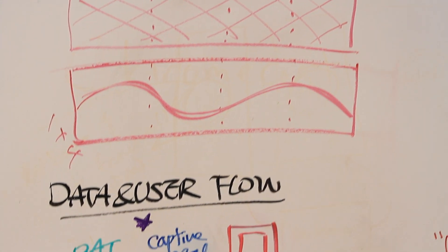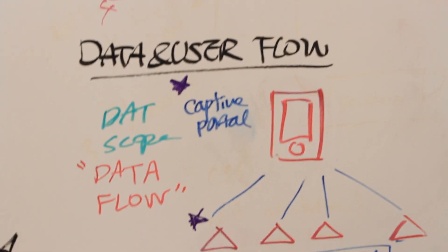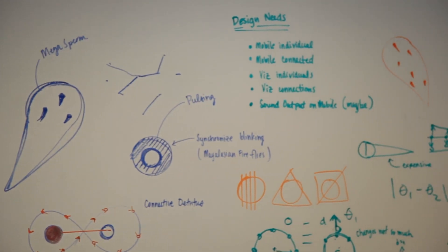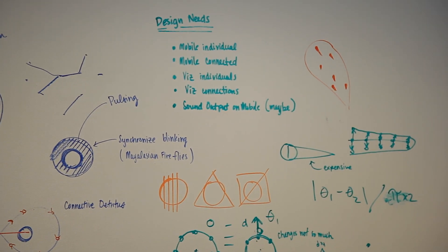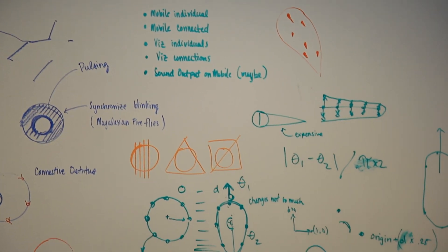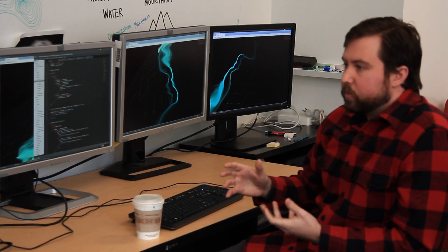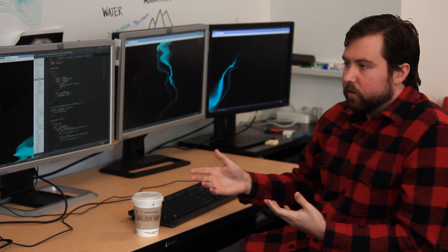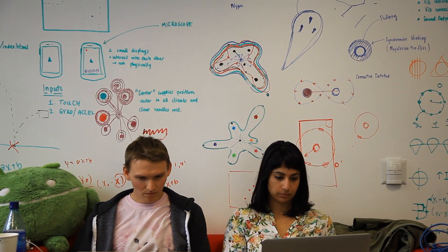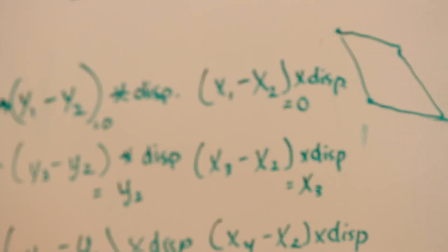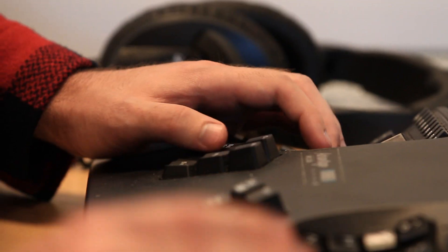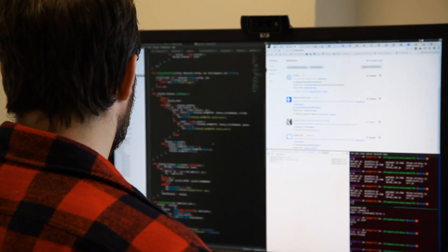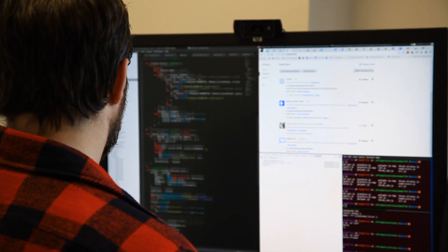We had the issue of doing all this complicated piping of network throughput. Being at Google, we're pretty familiar with this programming language called Go, which was actually developed here. It sits somewhere between Python and C, and it's great for high throughput networking.